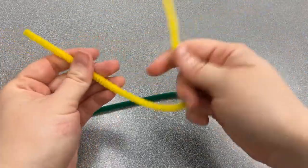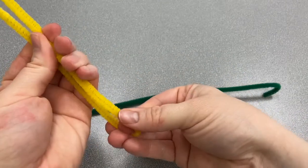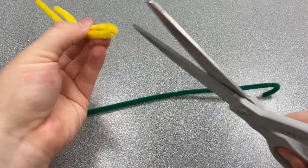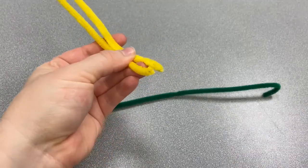Take the yellow pipe cleaner and fold it in half. And then cut it in half because we only need half of it for our project.